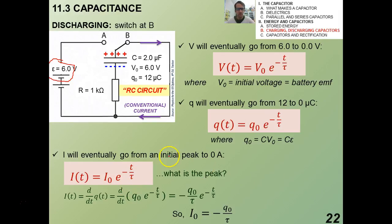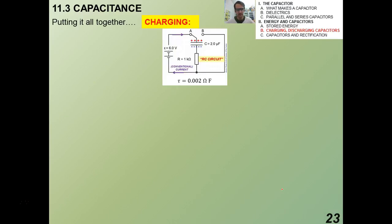Now, what is that peak? In order to get that peak, what we have to do is we're going to differentiate this function for Q of T, right? Because delta Q over delta T is the current. I take the derivative of that. I end up that that equals negative Q naught over tau. So I naught, the original or that peak current, is going to be negative Q naught over tau, interestingly. And I want to also point out that I naught is also negative V over R, as would be expected from Ohm's Law.